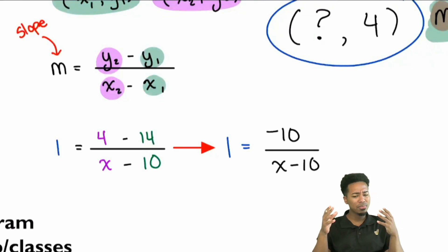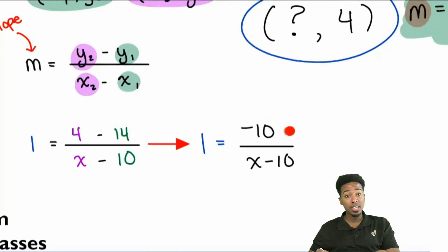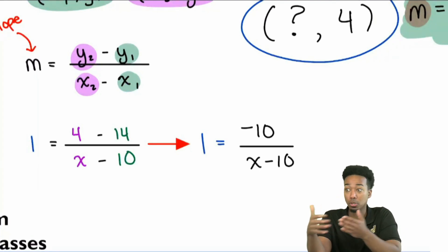So, now that we're here, there are two very, very approachable ways to do this. Number one, it's going to be the eyeball test. Everybody, what this is saying is it's saying, hey, negative 10 divided by whatever this is, is going to be 1. My party people, quick question. What's the only way that you can divide a number and get 1? What's the only way that can happen? What's the only way you can divide a number and get 1?